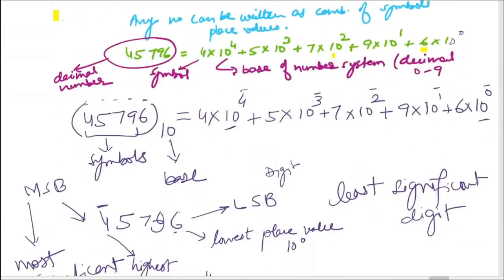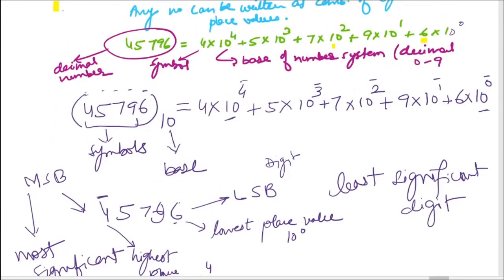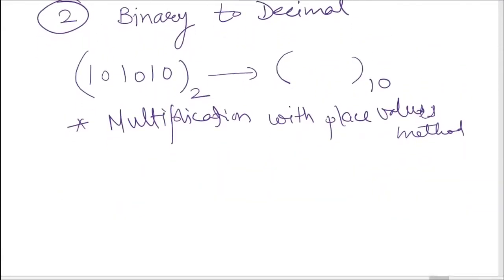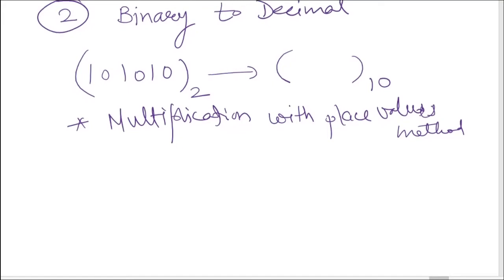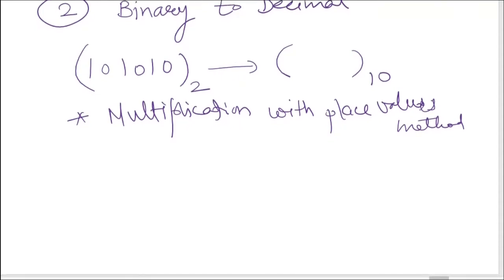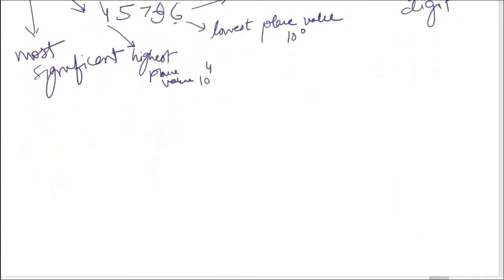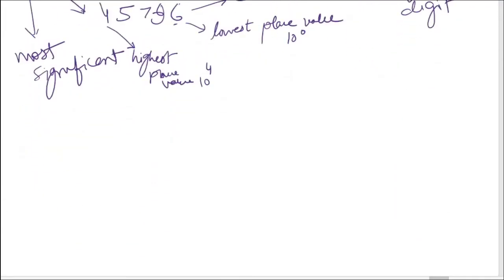This is the decimal number system expansion. Now, can we have a similar place value expansion for a binary number system? Yes — we can expand any binary number using its place values, and this is exactly the multiplication with place values method.